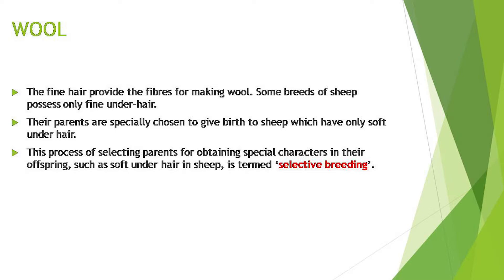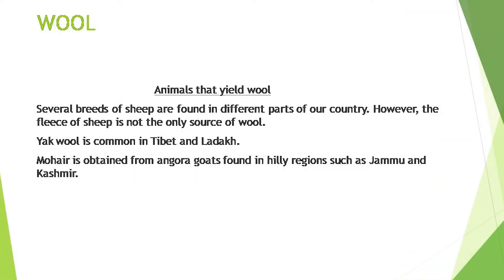Their parents are especially chosen to give birth to sheep which have only soft under-hair. This process of selecting parents for obtaining special characters in their offspring, such as soft under-hair in the sheep, is termed selective breeding.